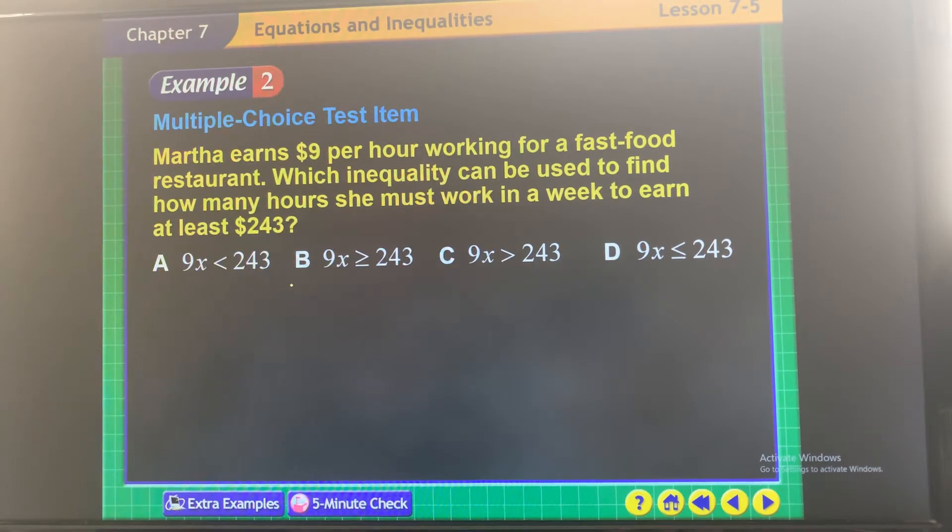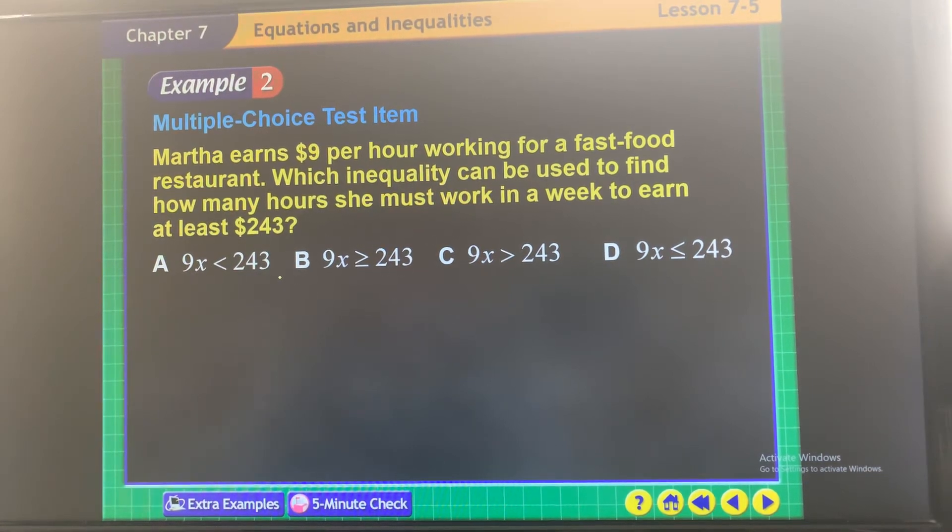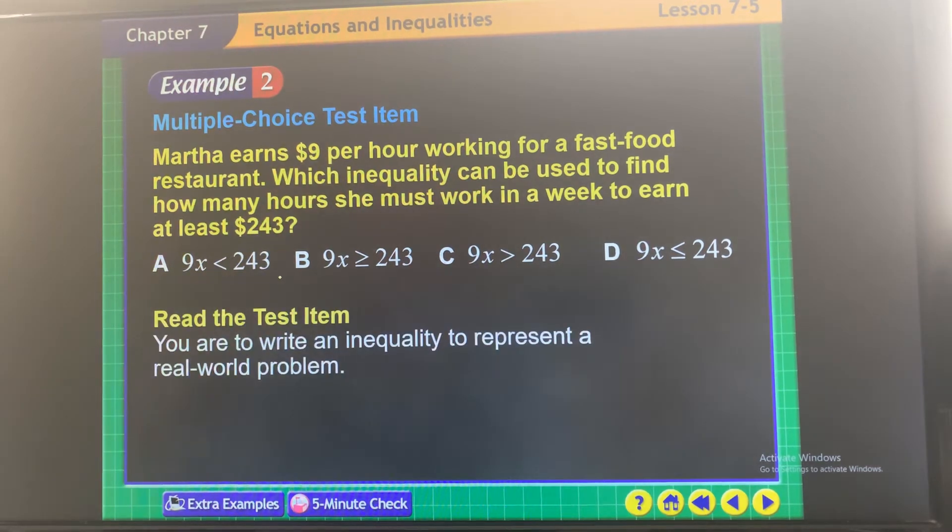First, we want to see what our equation looks like. Martha earns $9 per hour working for a fast food restaurant. Which inequality can be used to find how many hours she must work in a week to earn at least, at the very least, $243? So you have to ask yourself, is she okay with earning $243? I think so, because she said at the very least. Does she want to earn more than $243? I think so. So which one is showing that she wants to earn more than or equal to $243? And your answer would be B.